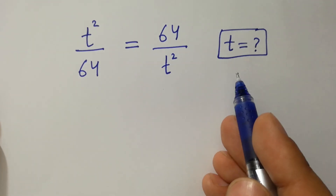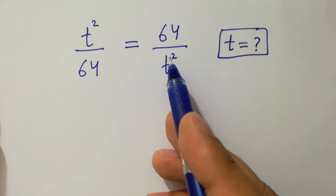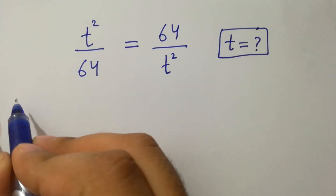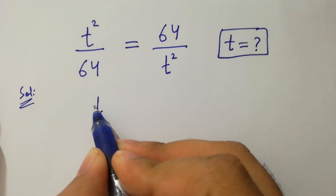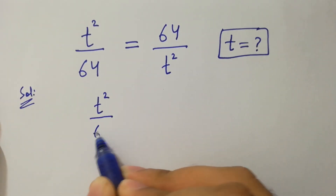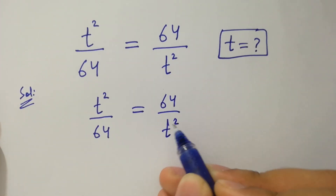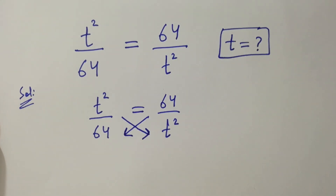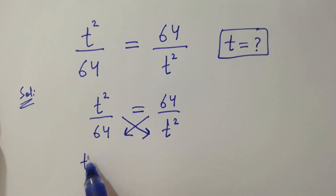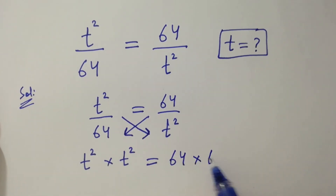Hello friends, find the value of t if t squared over 64 equals 64 over t squared. Let's have a solution. So we have the equation t squared over 64 equal to 64 over t squared. It can be solved by cross multiplication. We have t squared times t squared equal to 64 times 64.